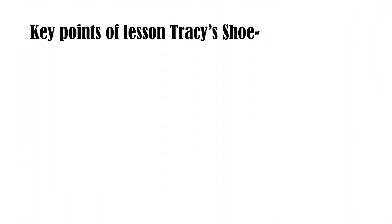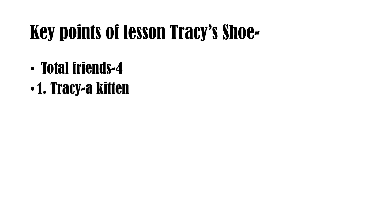First, we will see the key points or important points of this lesson, Tracy's Shoe. In this lesson, as we have read, there were 4 friends. Let's see who they were. The first one is Tracy. This lesson is Tracy's Shoe, so the first character is Tracy. Who is Tracy? A kitten — a kitten means the baby of a cat. So Tracy is a cat's baby.